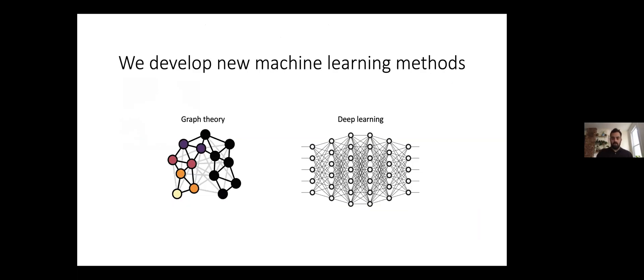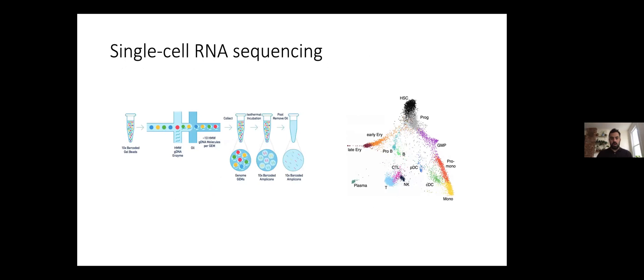The core technology of our lab is the algorithm. It's the machine learning, and in general we set out to develop new machine learning methods and apply these to these data sets. We work with generally two kinds of computational technologies: graph theory and graph signal processing, and deep learning. In the past years we've been working a lot with single cell RNA sequencing, but we're gradually expanding out to other data modalities.